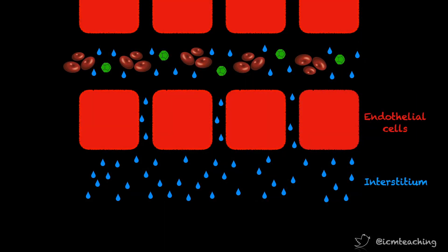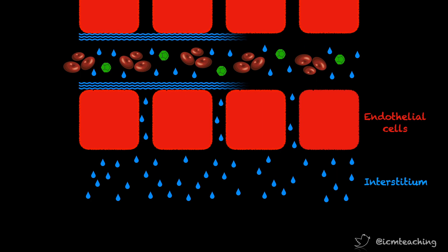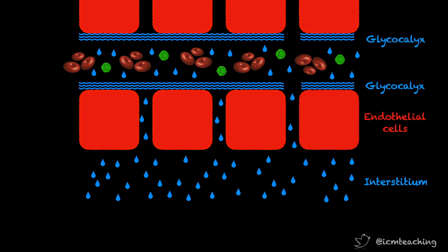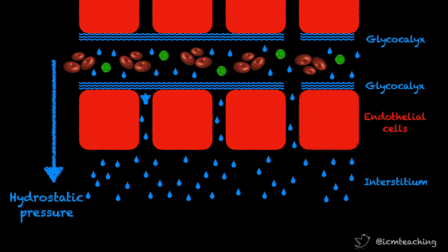We now know that capillaries are lined by a spongy layer called the glycocalyx. This contains water in a gel phase — it probably contains around one litre of the intravascular volume, which, as it's in a gel phase, is not free-flowing like the rest of the plasma. In contrast to what we learned in medical school, we now know that capillary pressures just exceed colloid osmotic pressures down their length. This means filtration of fluid from the vessels to the interstitium occurs down the whole length of capillaries at both arterial and venous ends. No fluid is reabsorbed back into the capillaries — it's all removed by the lymphatics.